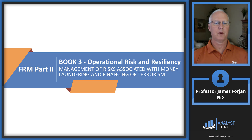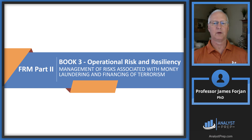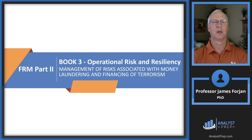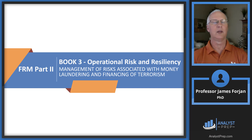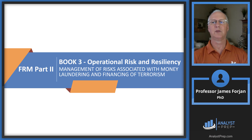This is FRM Part 2, Book 3, Operational Risk and Resiliency, and the chapter on management of risks associated with money laundering and the financing of terrorism. This is another short chapter, written by Mark Carey, who is part of the Global Association of Risk Professionals — in fact, he is the co-president of the GARP Risk Institute.